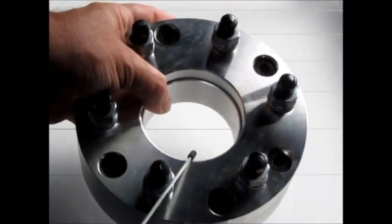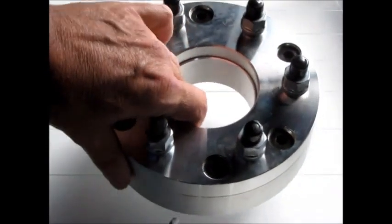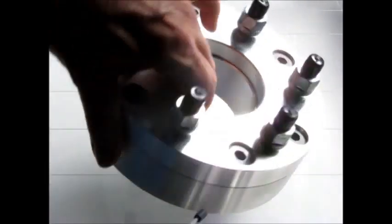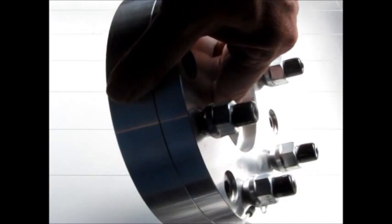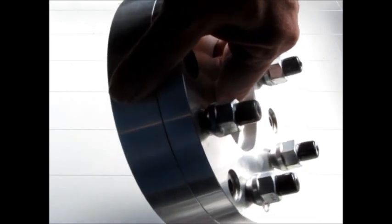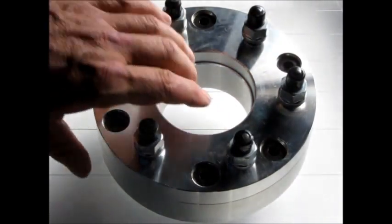These again are lug centric, meaning they do not have a lip sticking out on the wheel side, so the lug nuts center everything up. Has to have a wheel that takes a conical seat lug nut, not a flat bottom lug nut like some of the Fords. On the wheel side has to have a conical seat, and that's a two piece, two inch thick, five to six lug wheel adapter.